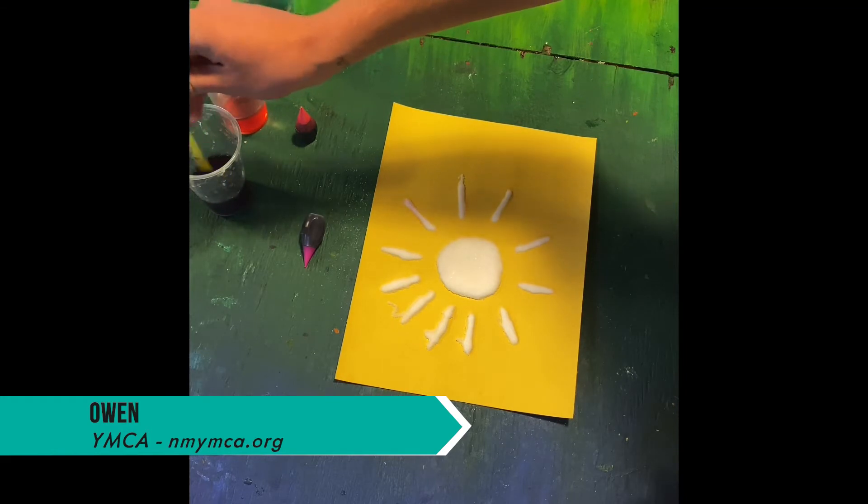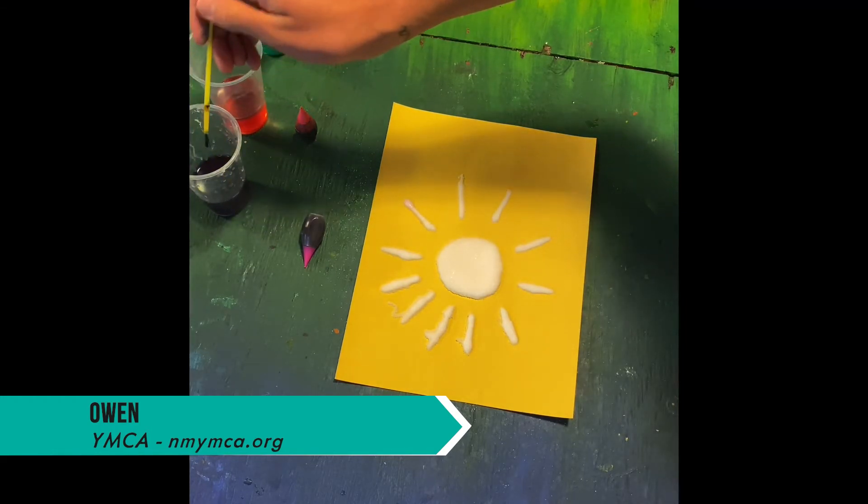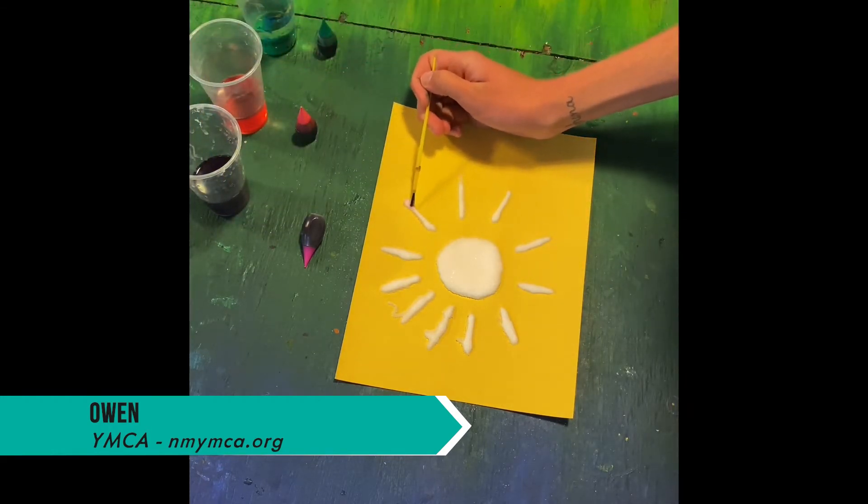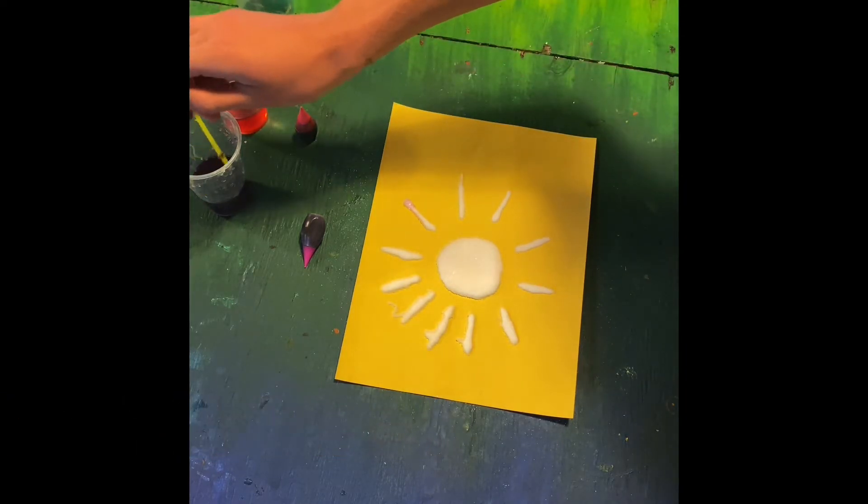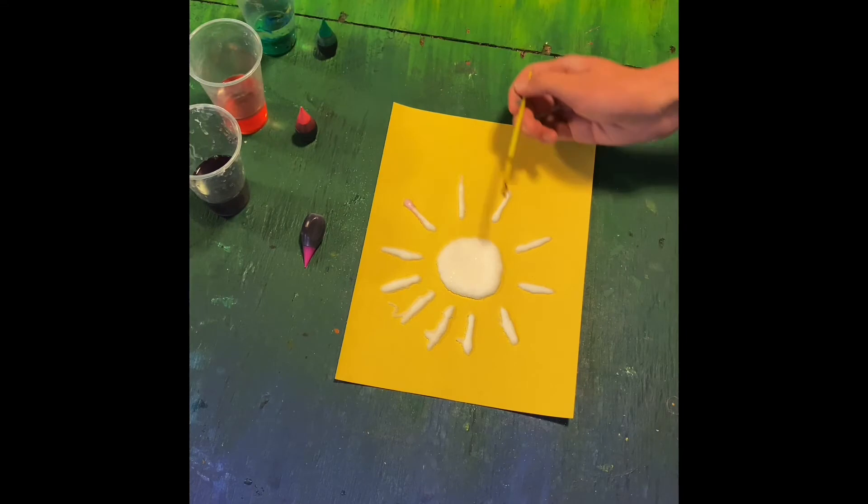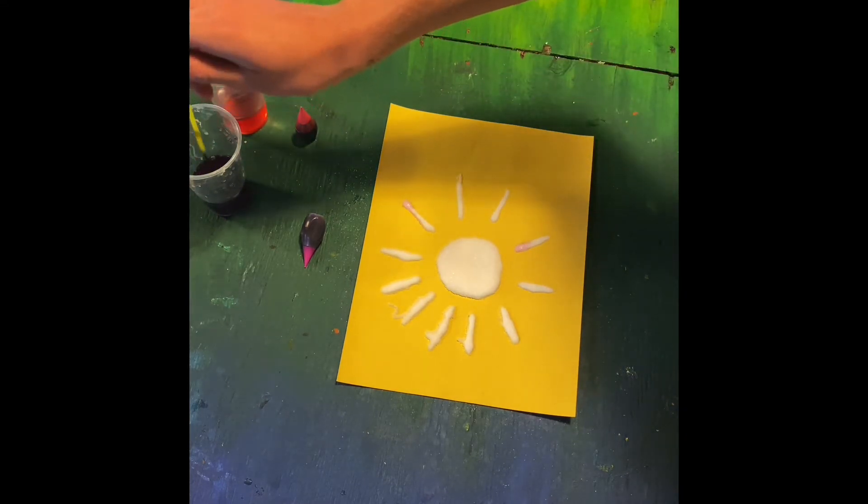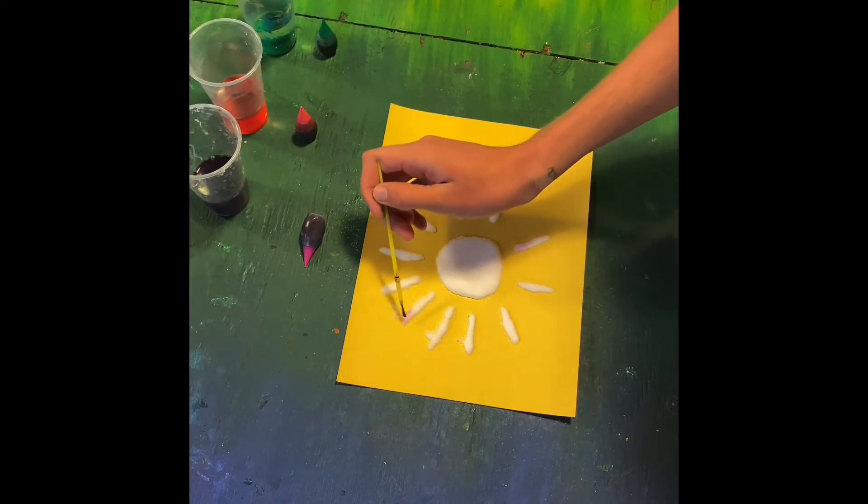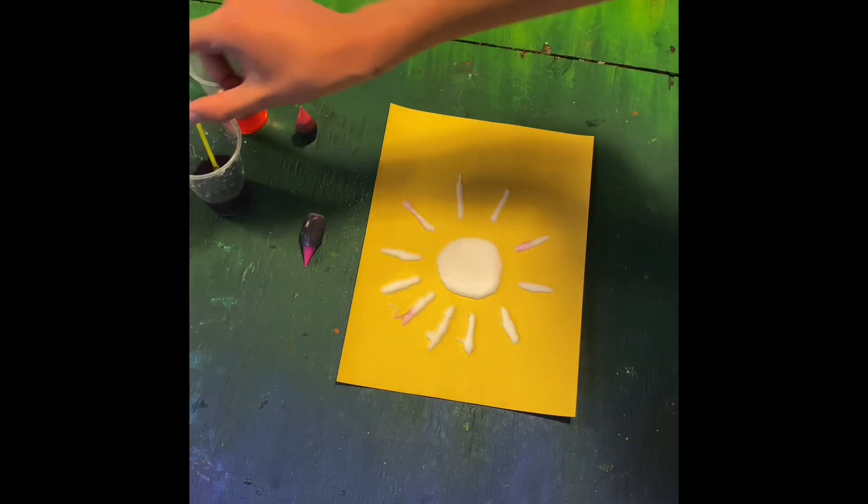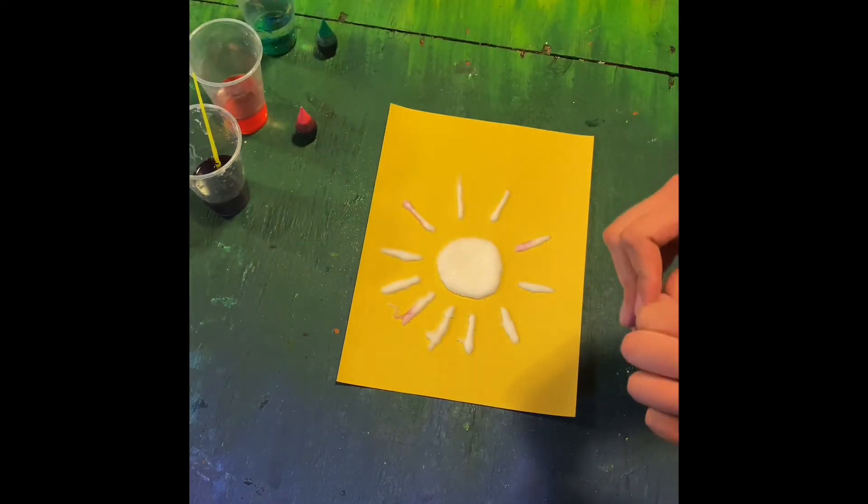Mix that in. So your goal is to kind of make it like a tie dye almost. So you're going to just put the color in random places. I want a little bit more color. So I'm going to add just one more drop.